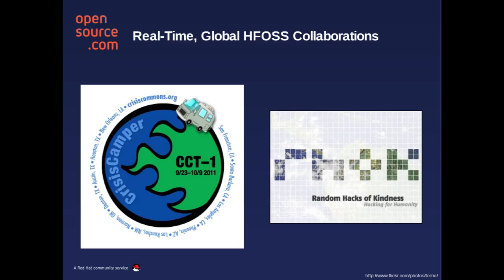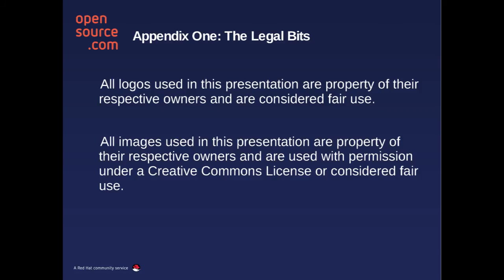Last but not least, the really cool thing about the humanitarian FOSS world is it's spawned a whole bunch of different types of global real-time collaborations — from Random Hacks of Kindness events where folks come together to work on a problem over a weekend, to actual real-time collaboration to help mitigate disasters as they occur. The Crisis Commons folks put on crisis camps; the Humanitarian OpenStreetMap team has HOT activations, and those folks are actually working together right now to help out the folks in Colorado with their wildfires with real-time map data. I hope you'd like to contribute to HFOSS. The end.